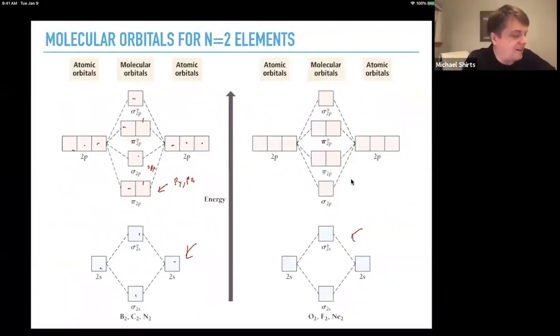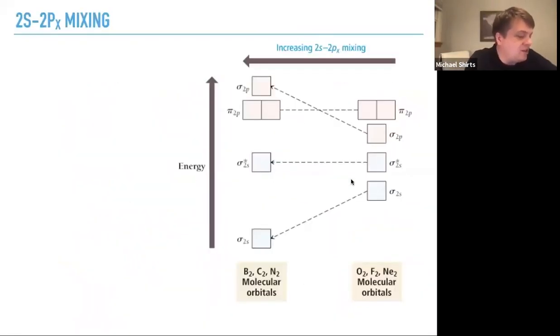So, what we have is that for B2, C2, and N2, the 2s and the 2px orbitals are closer together in energy, so they can mix a little more.